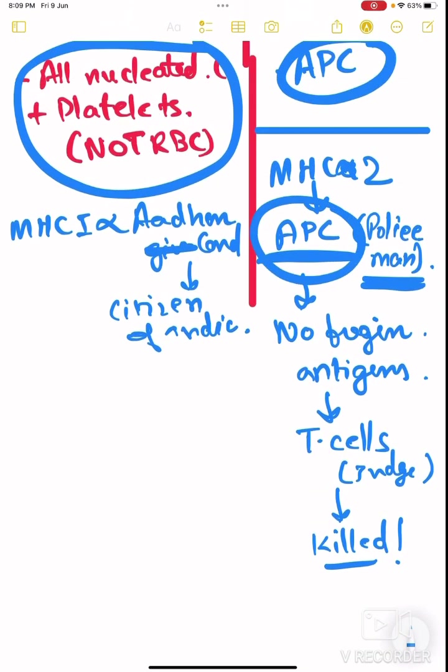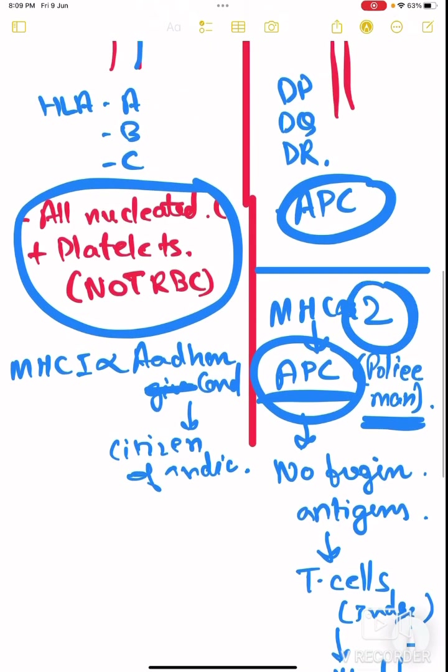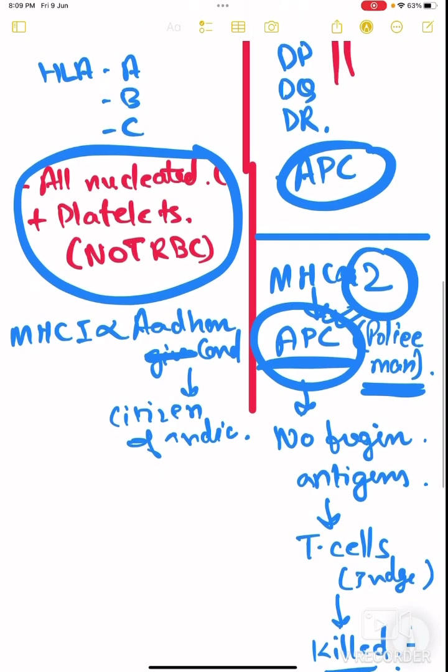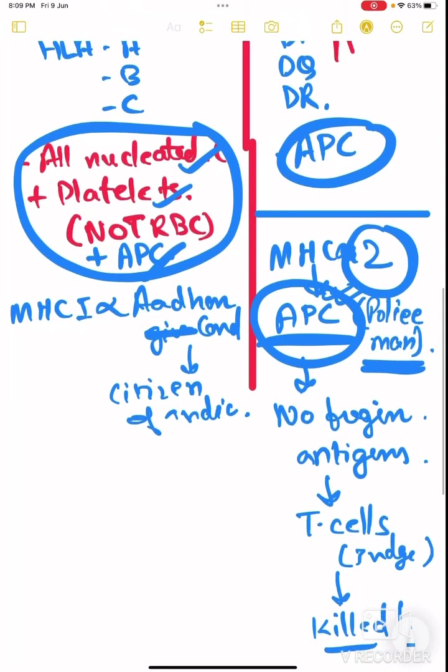So antigen presenting cells present MHC class 2. But you also know that antigen presenting cells are just like policemen. So policemen are also citizens of India. So since they are citizens of India, they will also express MHC class 1. So MHC class 1 is expressed in all nucleated cells, platelets, and APCs, but not in RBCs.